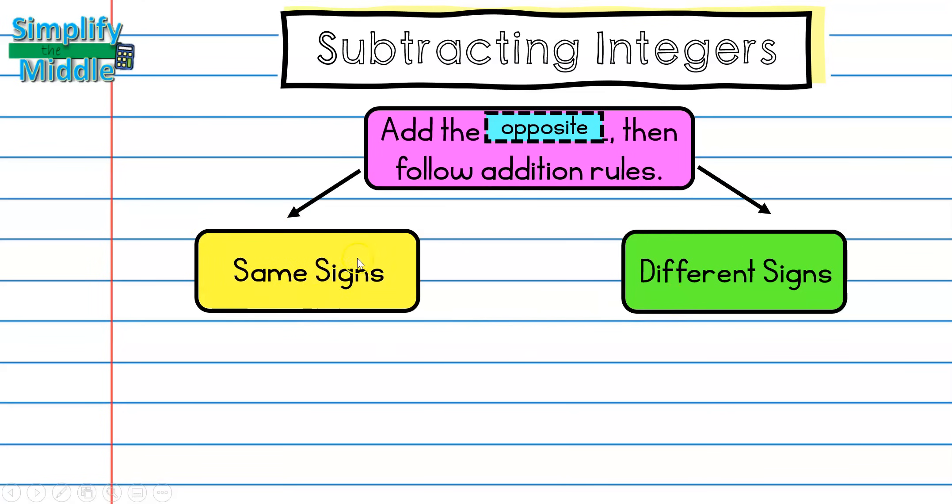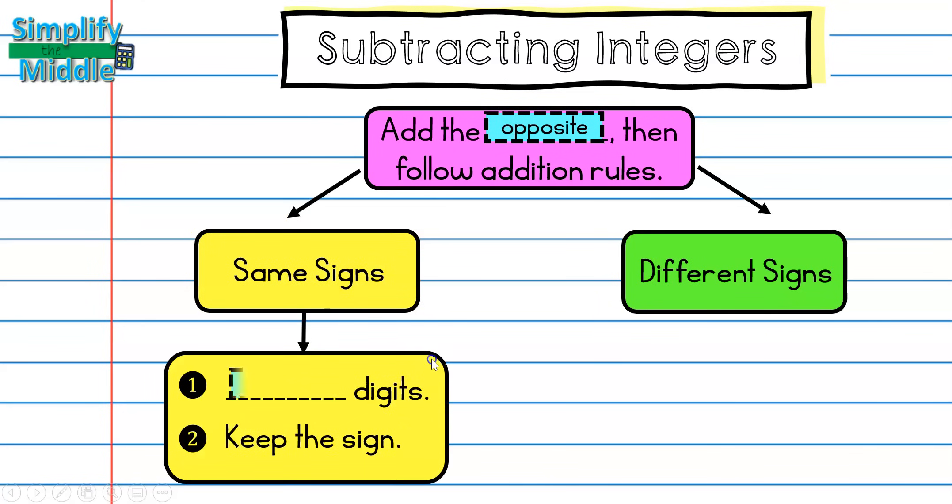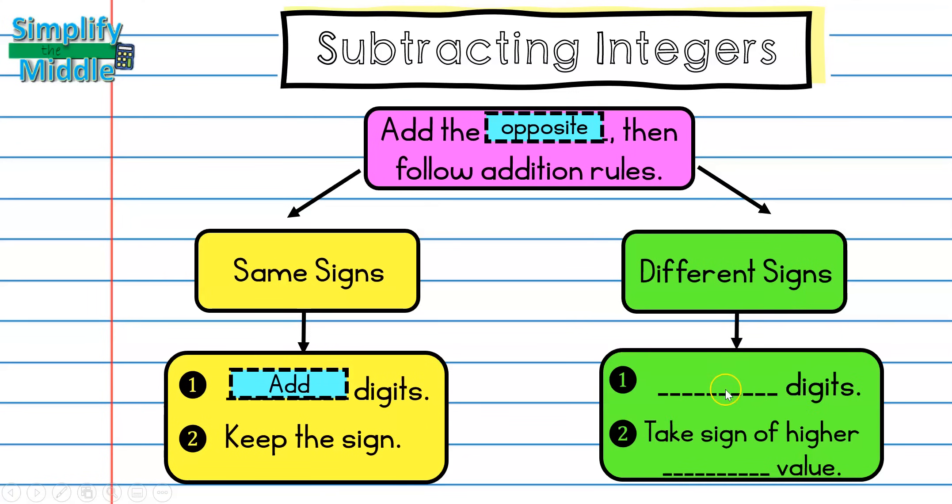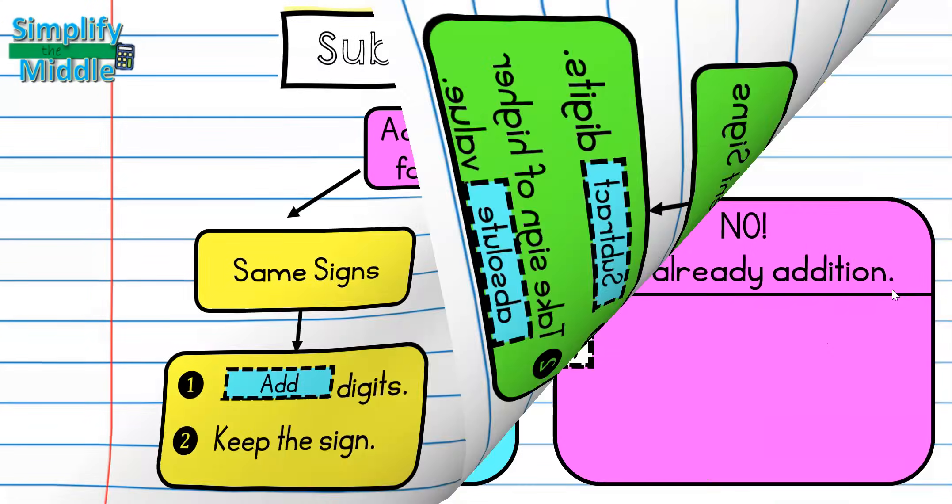Our addition rules: we have either same signs or different signs. If both numbers are negative or both are positive, then we follow same signs where we add the digits and keep the sign. If we have different signs where one is negative and one is positive, we'll follow these rules by subtracting the digits and taking the sign of the higher absolute value.